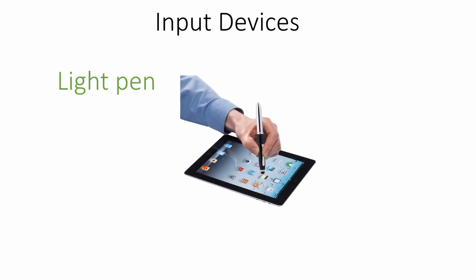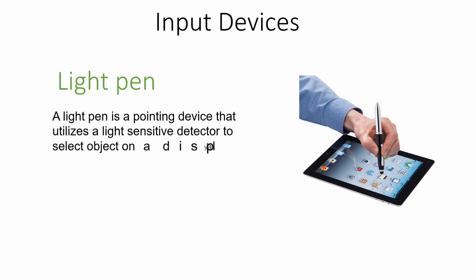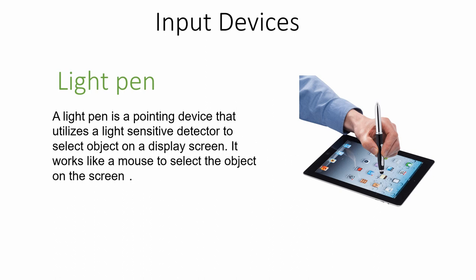Another input device is the light pen. A light pen is a pointing device that utilizes a light-sensitive detector to select objects on the display screen. It works just like a mouse to select objects on the screen. Nowadays we can see similar stylus sticks available for different smartphones as well, used to give input to the system.